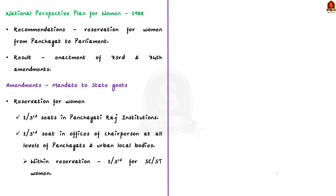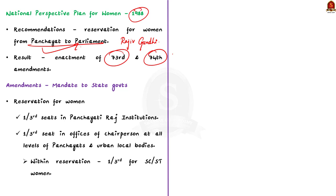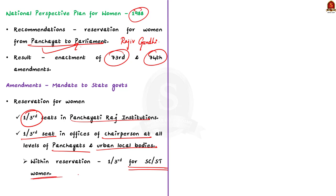In 1988, the National Perspective Plan for Women was presented to then Prime Minister Rajiv Gandhi, recommending reservation for women from the panchayat level to the parliament level. These recommendations paved the way for the historic enactment of the 73rd and 74th Amendments to the Constitution. These amendments mandated state governments to reserve one-third of seats for women in Panchayati Raj institutions and one-third of offices of chairpersons for women at all levels of Panchayati Raj institutions and in urban local bodies. Within these reserved seats, one-third are reserved for Scheduled Caste or Scheduled Tribe women.